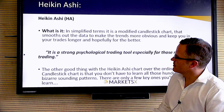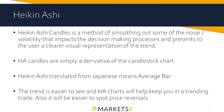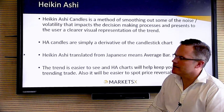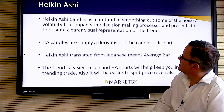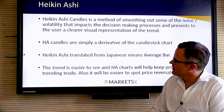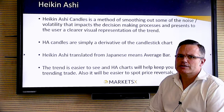What's the secret of Heiken Ashi? It basically just smooths out our traditional candlestick chart. It's taking out the noise and the volatility that impacts our decision-making and just gives you a very clear presentation of the trend — whether it's up, down, or sideways — that makes your decision-making a lot easier. All Heiken Ashi candles are just a derivative of the candlestick chart. If we translate the name back from Japanese, it means 'average bar,' and in its calculation it's just looking at two bars together, taking open, high, low, and close and smoothing that out.